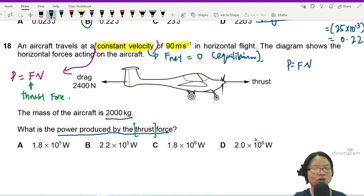But we got the thrust force. What is this? Constant velocity. Meaning the drag force pulling it backwards 2400. Then your thrust force will pull it forward by 2400 newton. And the net force is zero.